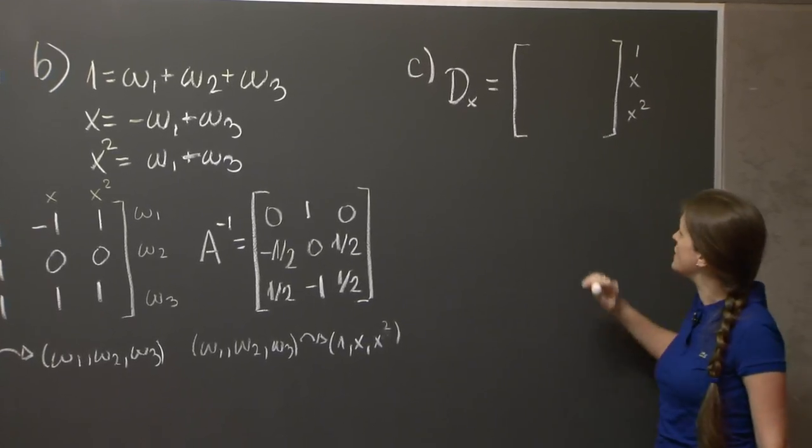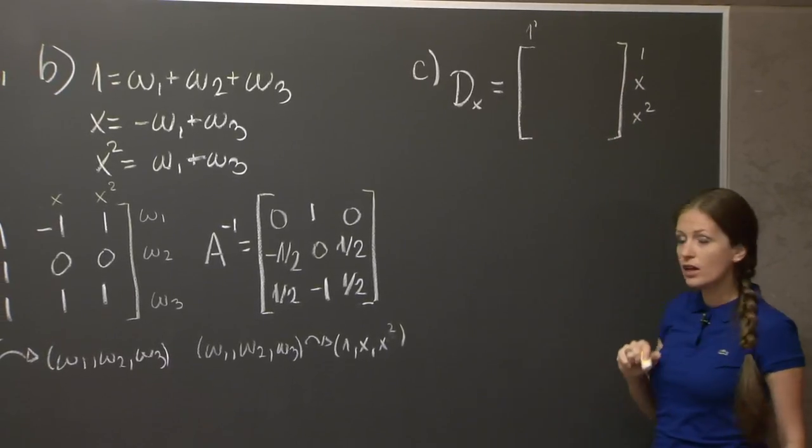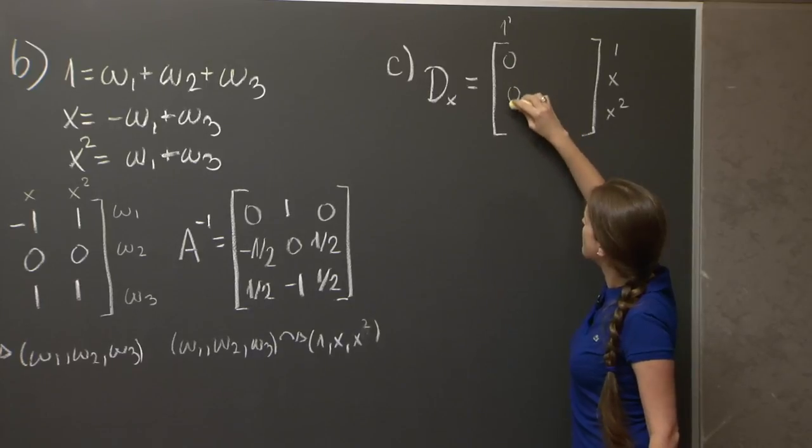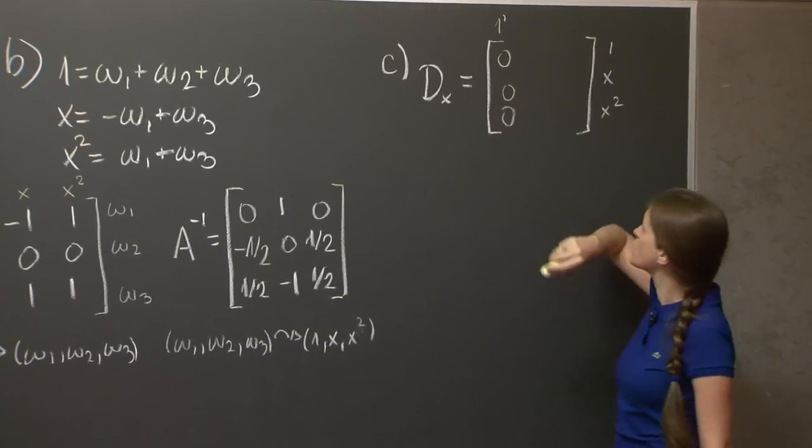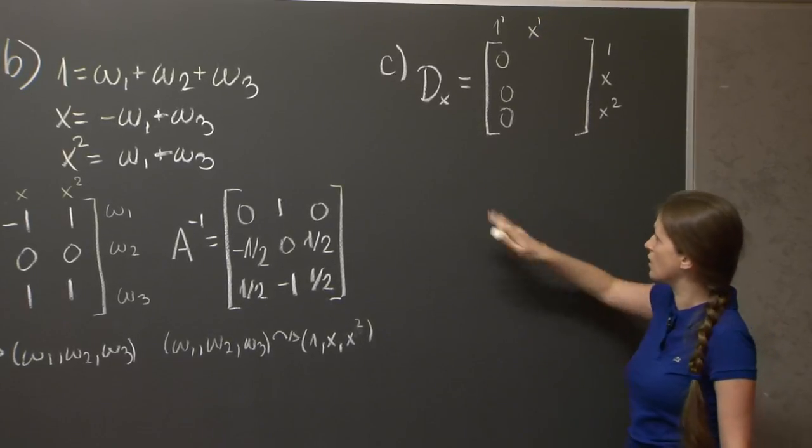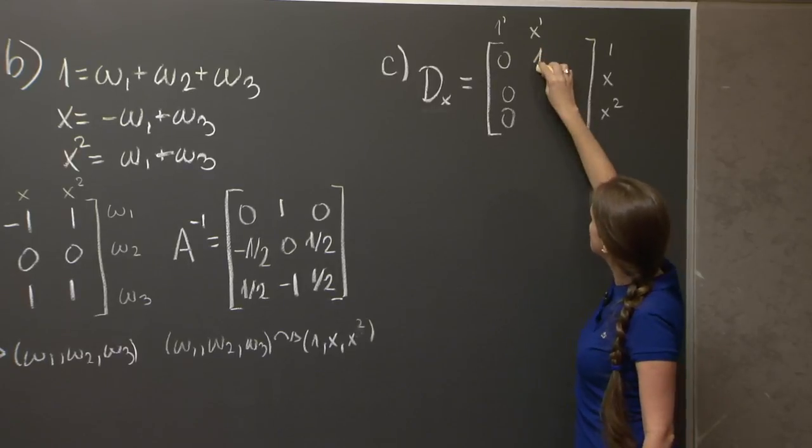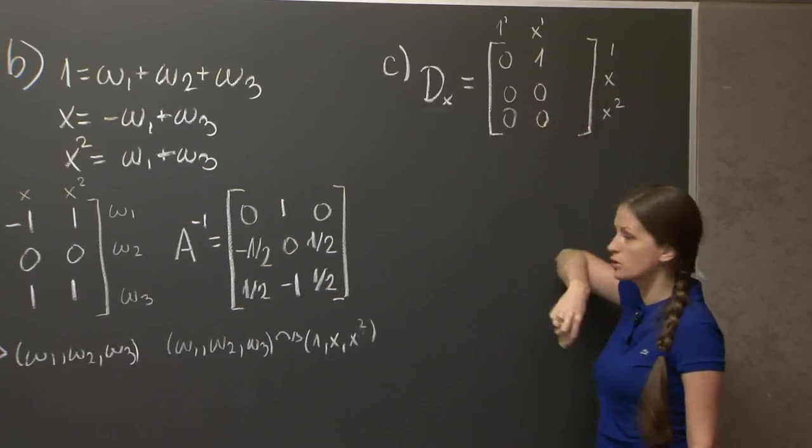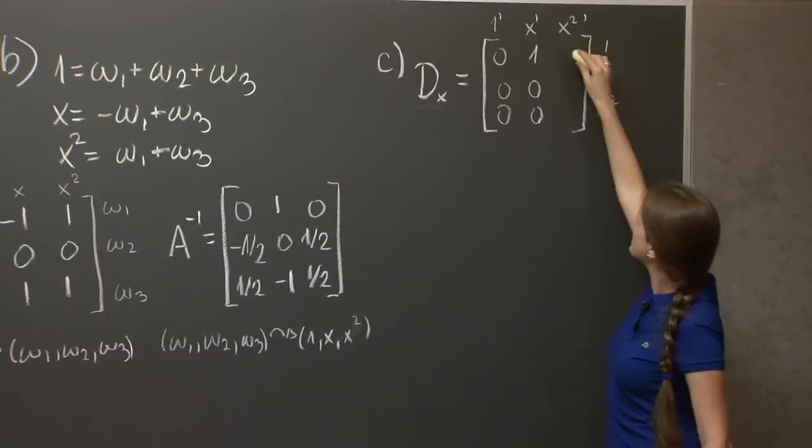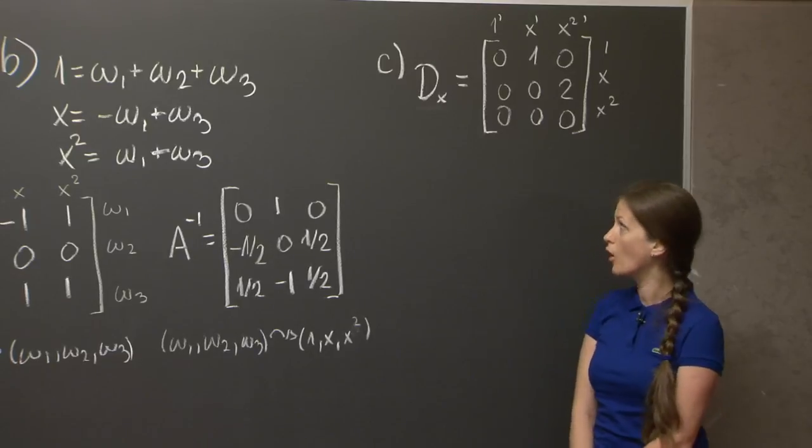I'm going to call it dx. So I'm going to work in basis 1, x, x squared. I'm going to write the vector to which taking derivatives maps the polynomial 1, which is 0. In the second column, I'm going to write x prime, which equals 1, which expressed in this basis is 1, 0, 0. And here, I'm going to write x squared prime, which is 2x, which expressed in this basis is just this.